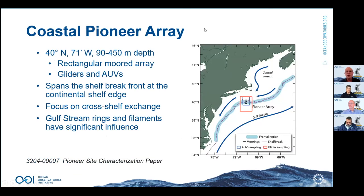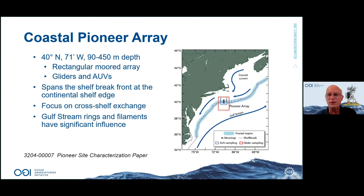The coastal Pioneer Array is the New England Shelf array — a rectangular mooring array supplemented by gliders and AUVs, roughly centered about 100 nautical miles south of Cape Cod. It spans the shelf break front at the edge of the continental shelf, shown as a stippled region in the figure, and is focused on understanding cross-shelf exchange and the influence of the Gulf Stream on this area.